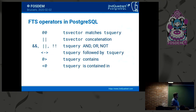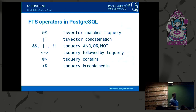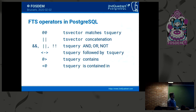The operator types for full text search are the double at-sign (@@), which means tsvector matches tsquery. You can also reverse it — tsquery matches tsvector — it works both ways. We have tsvector concatenation. For tsqueries, we have the operators AND, OR, and NOT that help you formulate your query. We also have the followed-by operator, which means tsquery one must be immediately followed by tsquery two — that's a way to define word order in your search. We also have contains and contained-in operators.